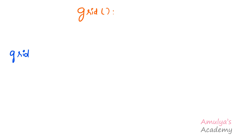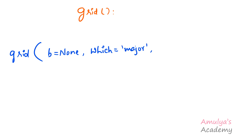The syntax of the grid function is: the function name is grid. This function belongs to the pyplot module, so you need to use matplotlib.pyplot.grid. The first parameter is b with a default value of None, the second is which with a default value of major, then axis with a default value of both, and keyword arguments.